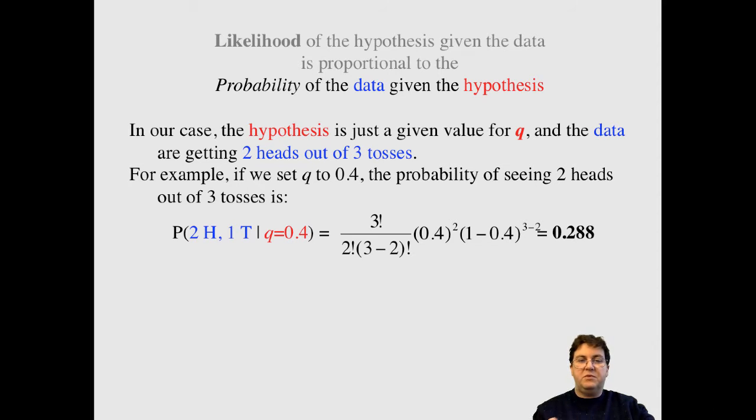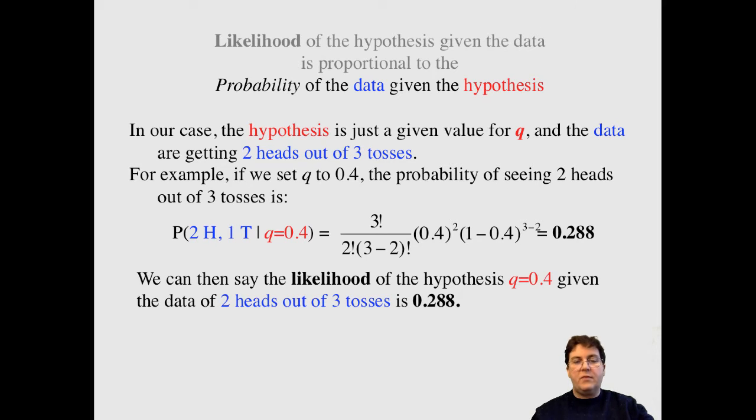So you can take the value of 0.4 for example, and there's plug and chug in a binomial formula. So probability of getting two heads and one toss, given that the coin has a 0.4 chance of winning heads, is, do the math, 0.288. So I'm going to say the likelihood of that hypothesis, of q equals 0.4, given the data of two heads out of three tosses, is 0.288. And that's just likelihood. That's it. So we just calculate the likelihood for this coin flipping example.